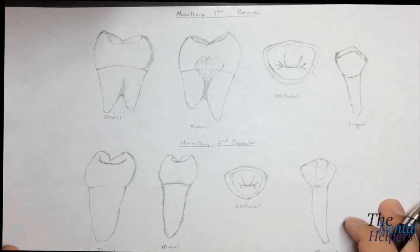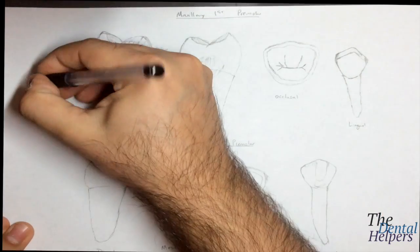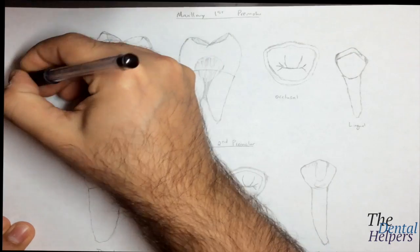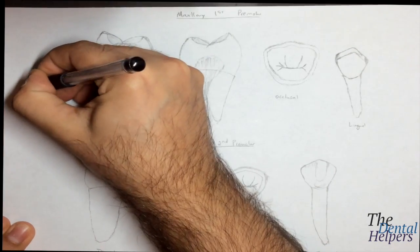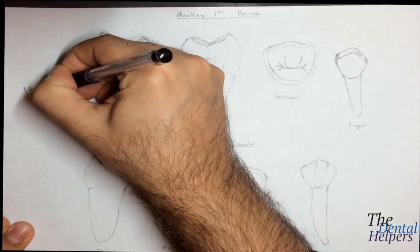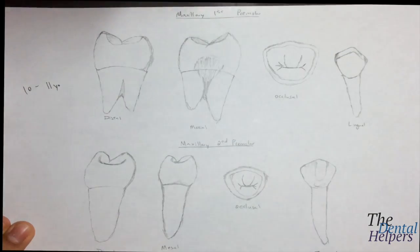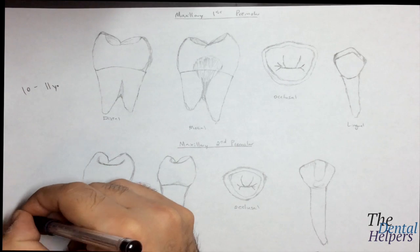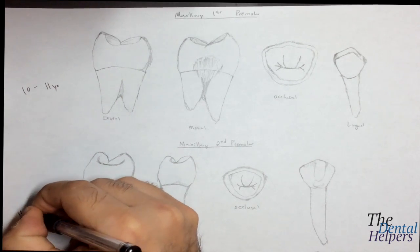The maxillary first premolar typically erupts around 10 to 11 years old, while the maxillary second premolar comes out around 11 years old.